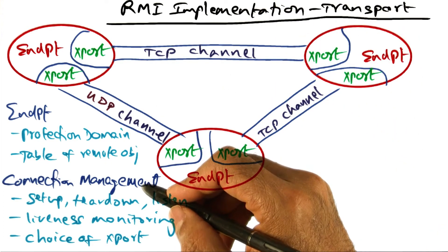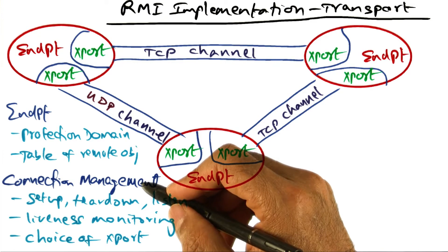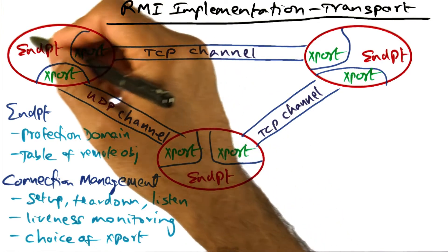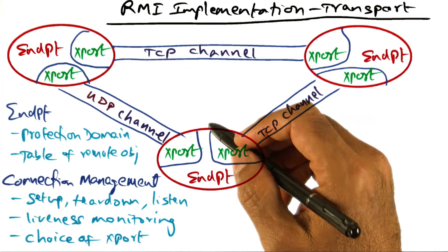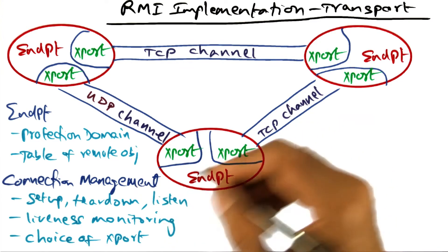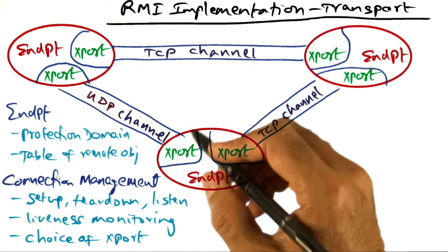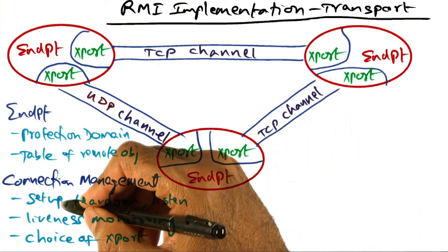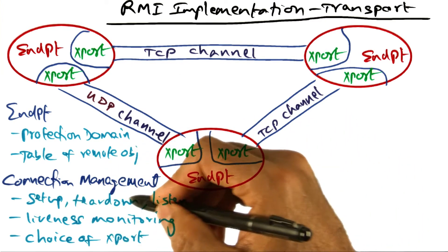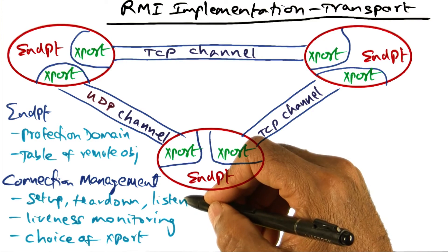Connection management is the interesting piece that worries about all of the details of connecting these endpoints together. The connection management of the transport layer of the Java runtime system is responsible for setting up connections, tearing down connections, listening for incoming connections, and establishing the connection.